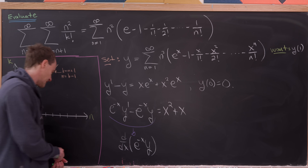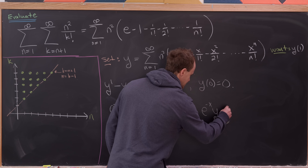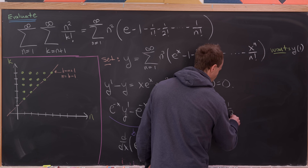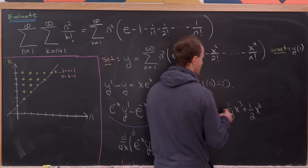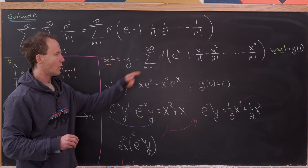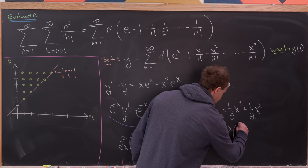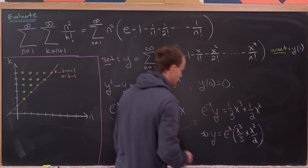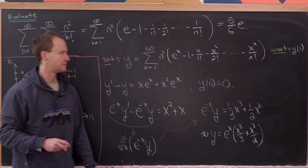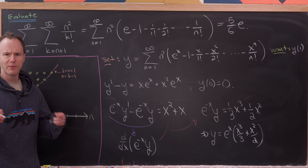The left-hand side is exactly the derivative of e to the minus x times y by the product rule. Taking the antiderivative of both sides, we get e to the minus x times y equals one-third x cubed plus one-half x squared, with the constant equal to 0 by the initial condition. Therefore y equals e to the x times the quantity x cubed over 3 plus x squared over 2. Evaluating at x equals 1 gives us the same final value as before. We've now evaluated the double sum two different ways and got the same answer — post in the comments which method you like most.